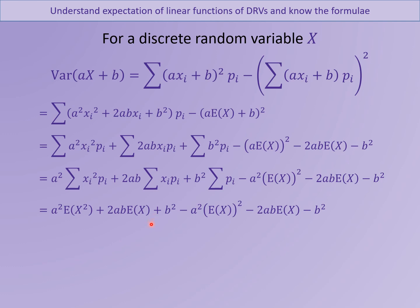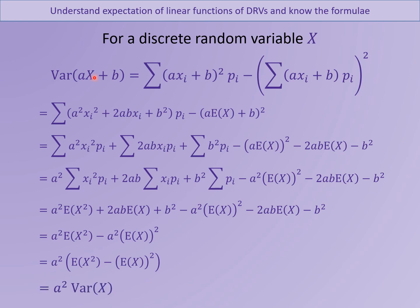We then notice that several terms cancel: 2AB·E[X] cancels with minus 2AB·E[X], and B² cancels with minus B². The remaining terms both contain A², which we factorise out, leaving E[X²] minus (E[X])² inside the bracket — which is just the formula for Var(X). So the variance of AX plus B equals A² times the variance of X. Notice that B does not affect the variance at all.